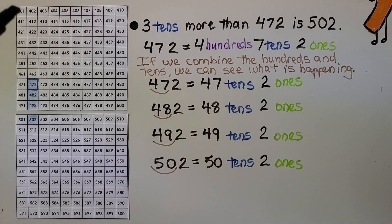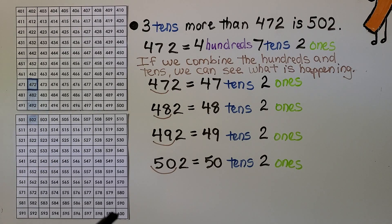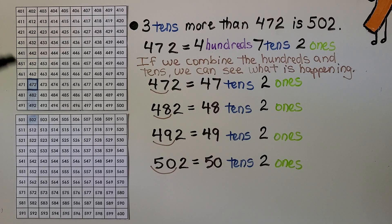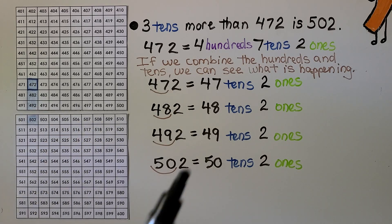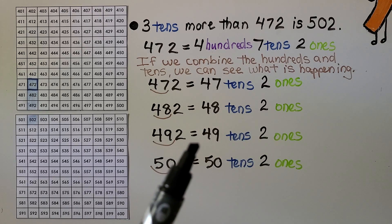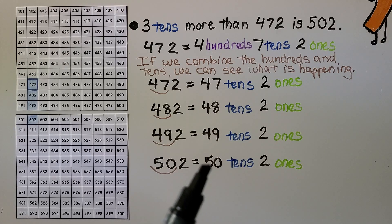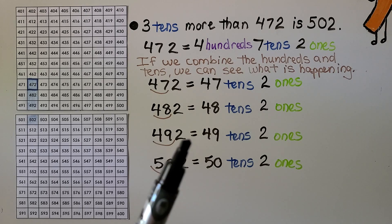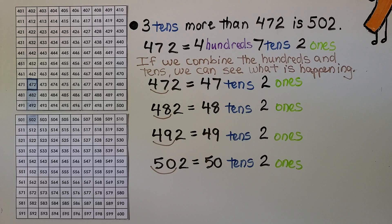We have a chart from 401 to 500 and one from 501 to 600. Three tens more than 472 is 502. We can see this by grouping: 472 is 47 tens and 2 ones; 482 is 48 tens and 2 ones; 492 is 49 tens and 2 ones; and 502 is 50 tens and 2 ones. Continuing: 51 tens, 52 tens, 53 tens, 54 tens — it's one more 10 each time.